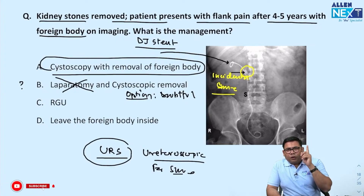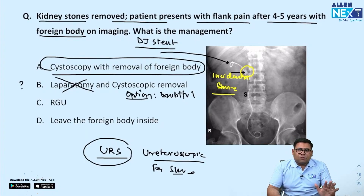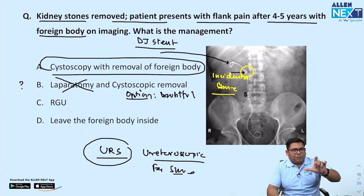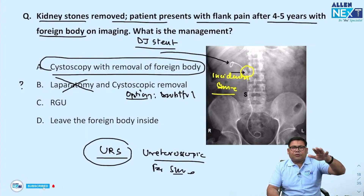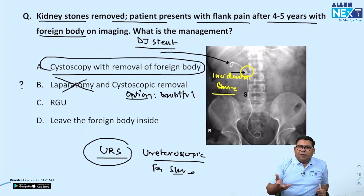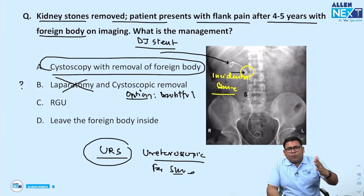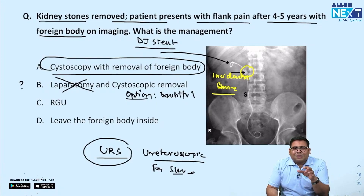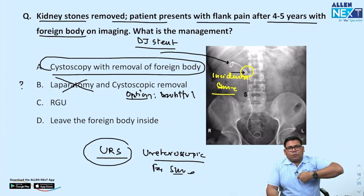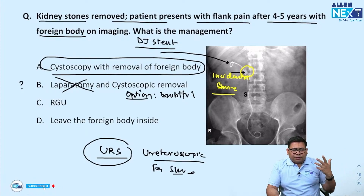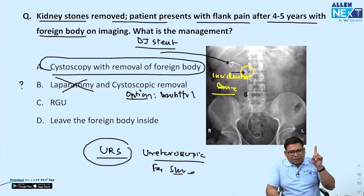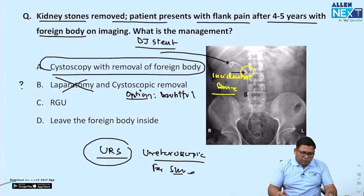During ureteroscopic removal, one can remove the incidental stone and also pull out the retained DJ stent. If the image shows a DJ stent and the options include cystoscopic removal of the foreign body, that means pulling out the DJ stent with a cystoscope — that is the correct answer in this scenario.